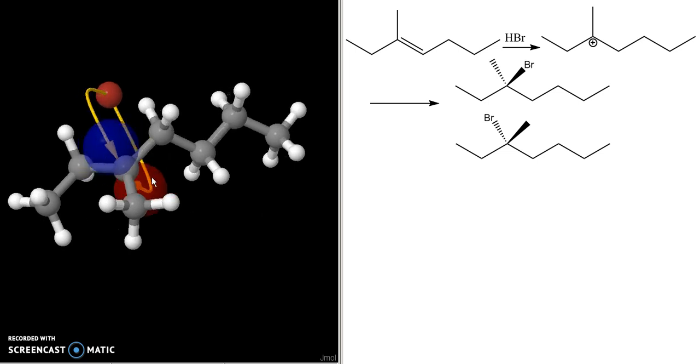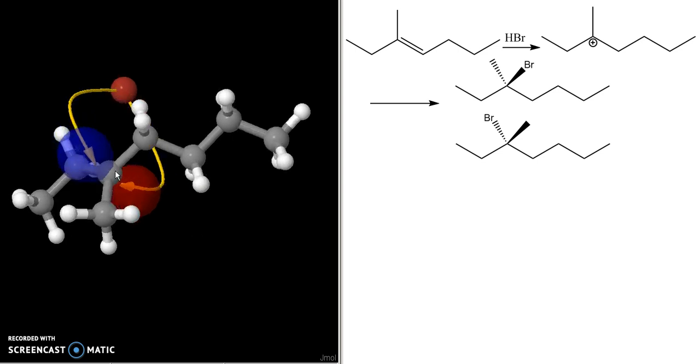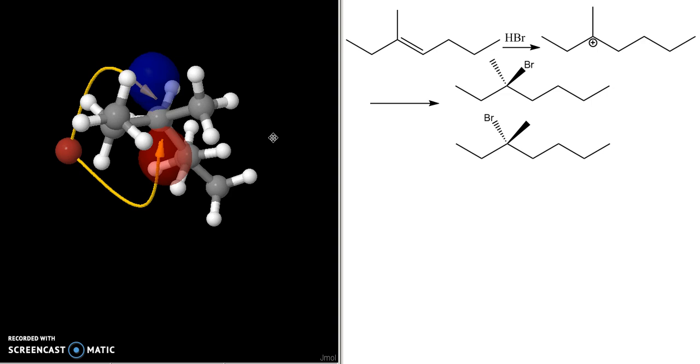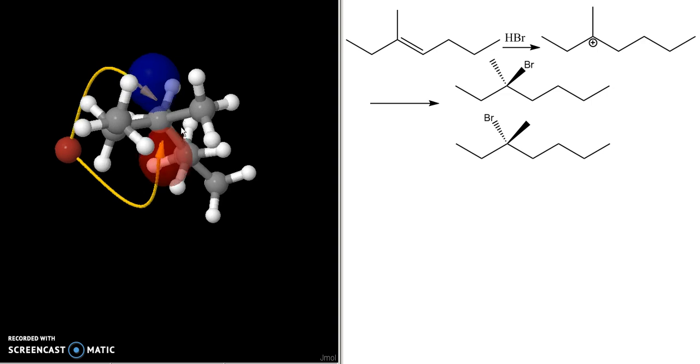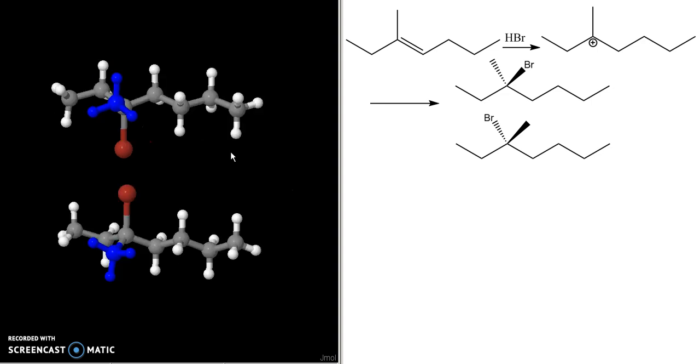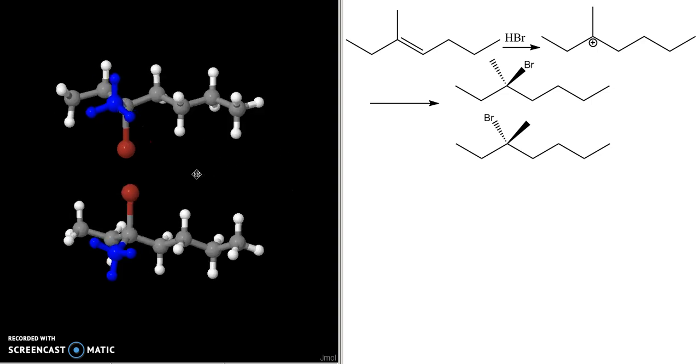And my bromine can add to either the top or the bottom of this carbocation right here. Carbocation is completely planar, and attack from either face is possible. And here are the two products that we can make in this reaction.